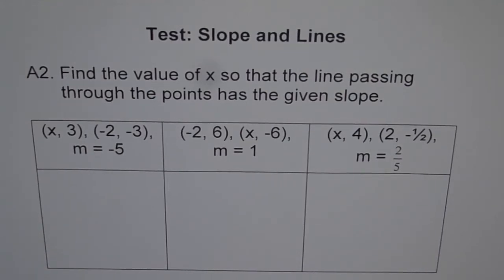Slopes and lines, application question 2: find the values of x so that the line passing through the points has the given slope. Just as we did in application question 1, we need to find the point coordinates for a given slope.